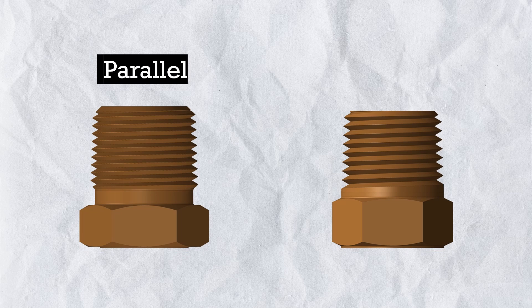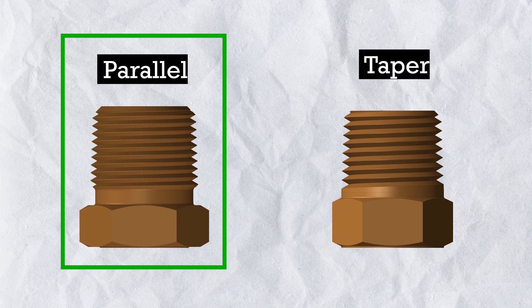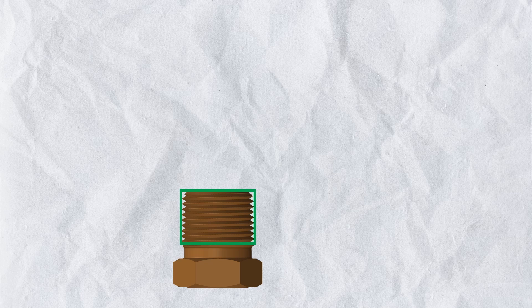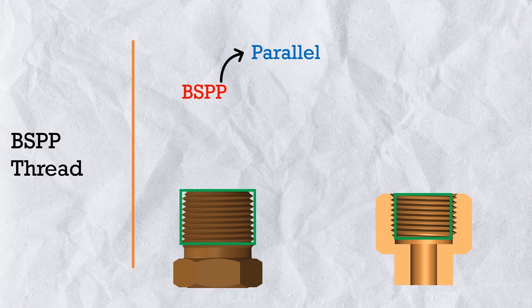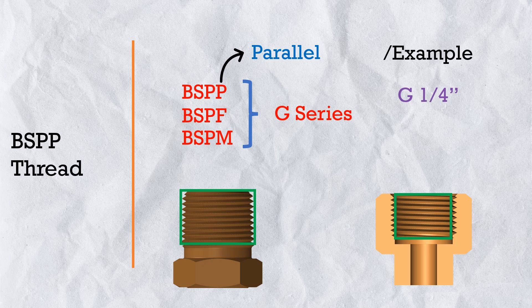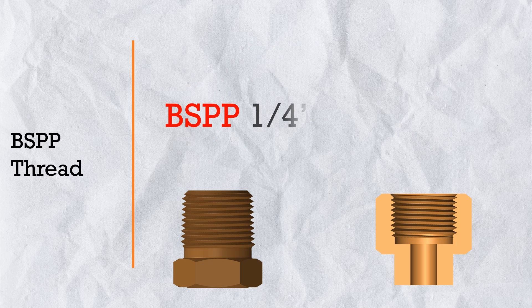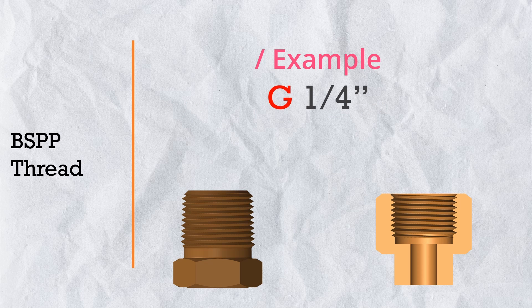The third and most important thing is the shape of BSP thread. BSP threads come in two shapes. The first is parallel thread — a straight thread where the diameter stays constant throughout the length in both male and female thread. We denote it as BSPP (parallel). In earlier times engineers also used BSPF and BSPM, but officially all three standards have been made obsolete and replaced with the G series. We still widely use BSPP as well as G thread, like G1/4 inch or G1/8 inch. BSPP and G thread are exactly the same, but when we write G1/4 inch it refers to both male and female thread, so we should always specify which one.